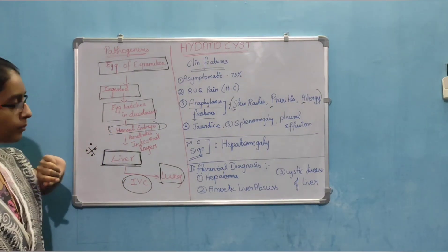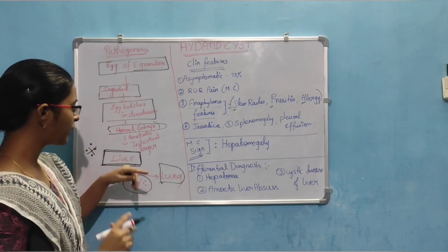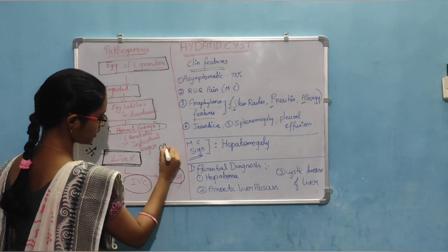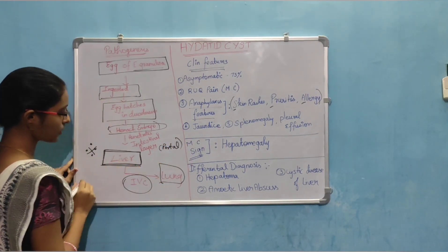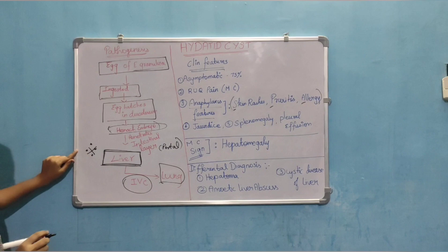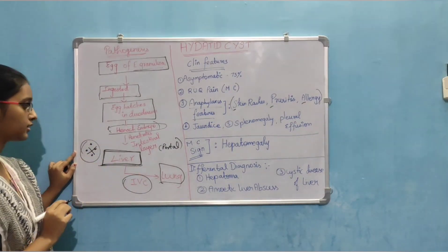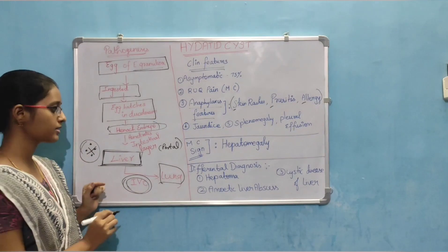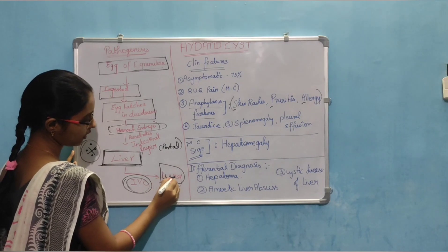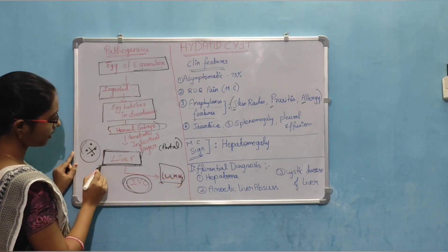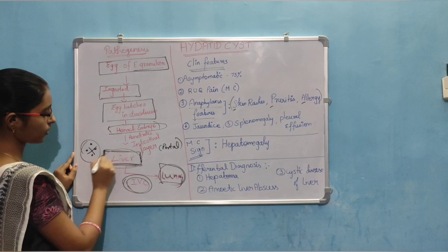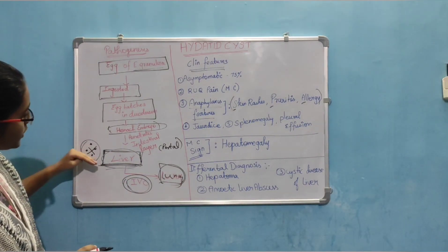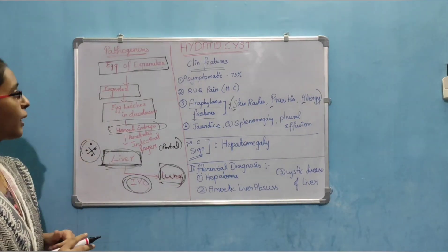So at duodenum it forms the hexanarch embryo and it penetrates within the intestinal layer and through the portal circulation it goes to the liver. So liver is the most common organ involved in hydatid cyst. And through the inferior vena cava circulation it also goes to lung. So liver and lung are those two important organs. This is about pathogenesis.